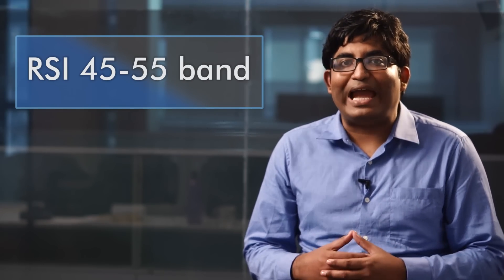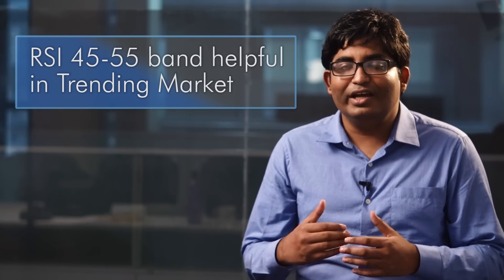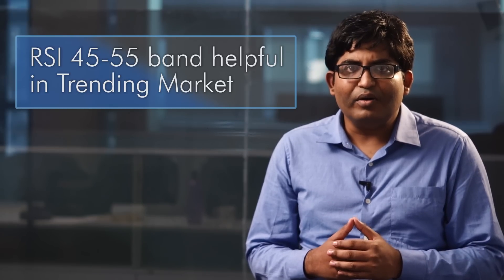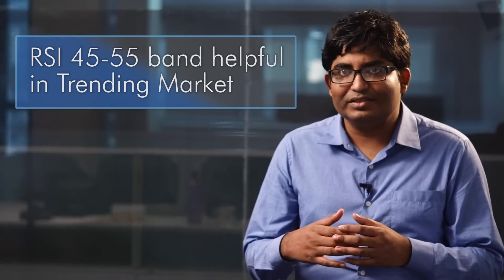The RSI 45-55 band is very helpful in a trending market. Now, how an uptrend happens? It goes up and up and up and in between there are minor consolidation or correction.